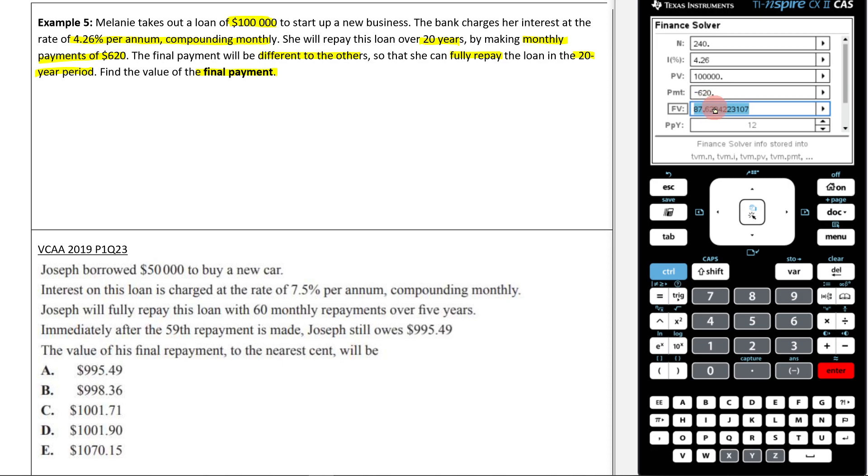When you're dealing with a reducing balance loan in the finance solver, and you're figuring out your future value, if it's positive, what that means is that you've given the bank too much money. You've given them too much money. You've overpaid. So, something's gone wrong. We shouldn't have overpaid. We should have adjusted our last payment in order that we don't overpay them.